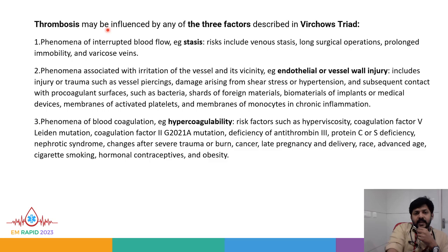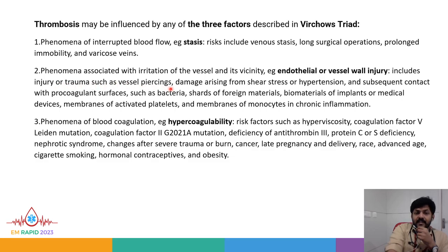Thrombosis may be influenced by any of the factors described in Virchow's triad, which comprises stasis, endothelial or vessel wall injury, and hypercoagulability. Risk factors for stasis include long surgical operations, prolonged immobility, and varicose veins. Endothelial injury includes trauma, shear stress, hypertension, and biomaterials of implants. Hypercoagulability risk factors include hyperviscosity, Factor V Leiden mutation, Factor II G20210A mutation, deficiency of antithrombin 3, and protein C or S deficiency.